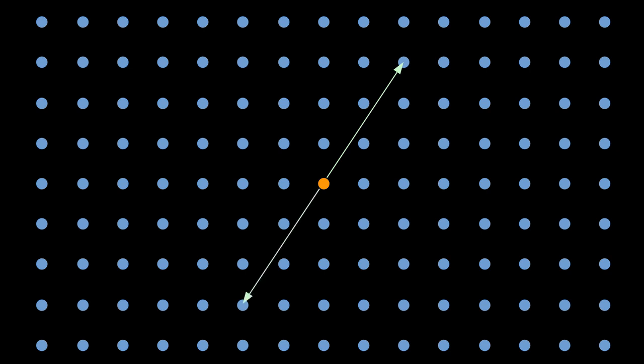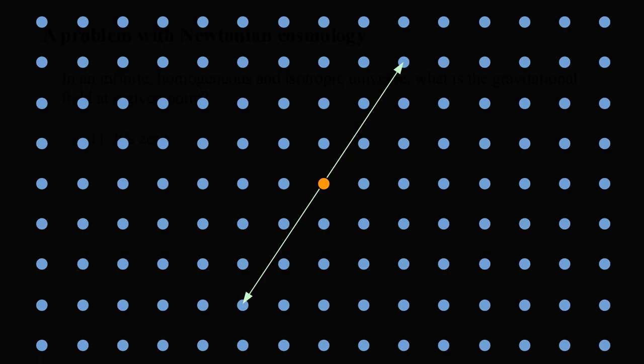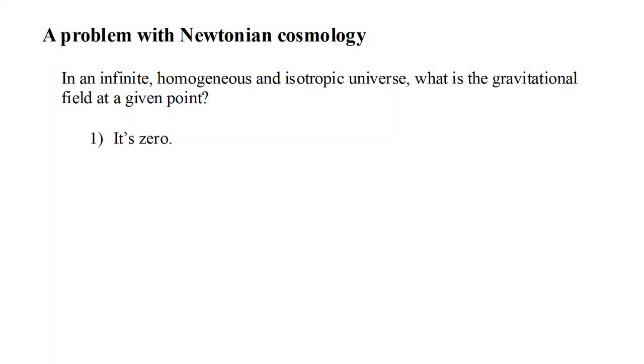That field is the sum of the forces of attraction due to each of the other masses in the universe. For any given mass, there will be another mass at the same distance, but in exactly the opposite direction. The forces due to these two masses will cancel. Extending this pairing off to all masses in the universe, we come to the conclusion that the gravitational field in an infinite homogeneous and isotropic universe is zero everywhere.